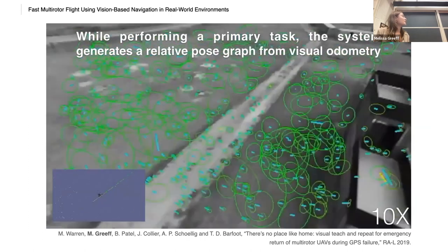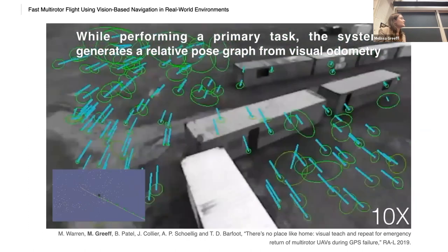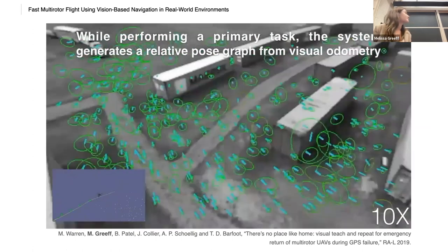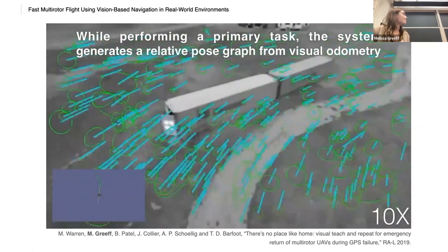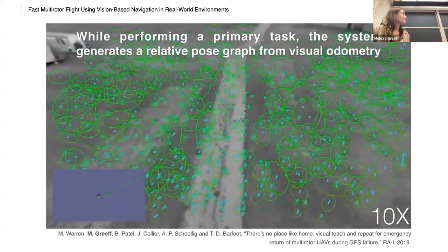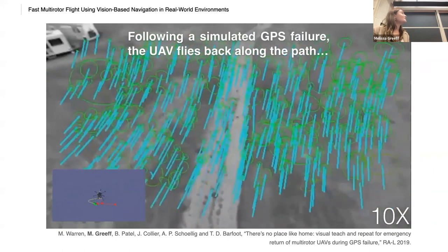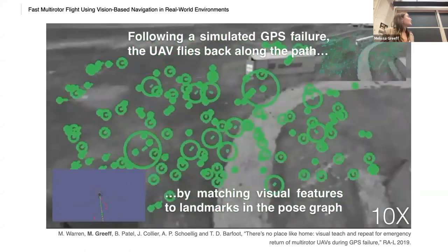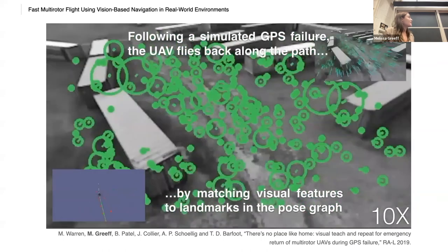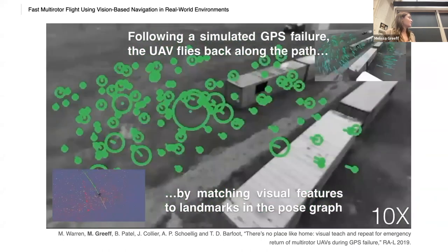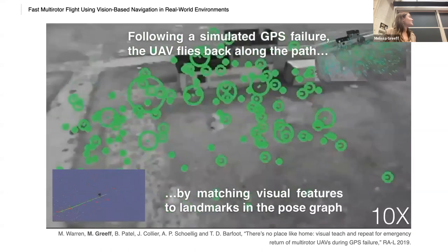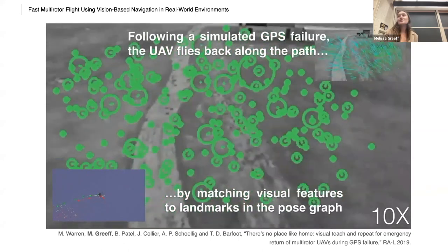So to initiate the system, the UAV takes off under GPS-based position control. While performing a primary task, the system generates a relative pose graph from visual odometry. And then following a simulated GPS failure, the UAV flies back along the path by matching visual features to landmarks in the pose graph. The green circles that you're seeing are successfully matched visual features, and we call those localization inliers.